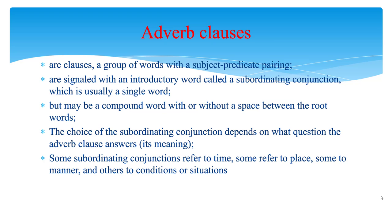In each of these sentences, the italicized word or words answer the question 'how' and describe the verb 'walked.' In the first sentence, there is only one adverb. But in the other two sentences, a group of words work together to act as an adverb. A clause is a group of words that contain both a subject and a verb.